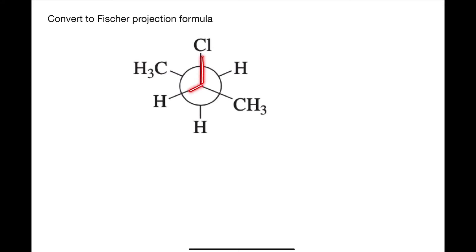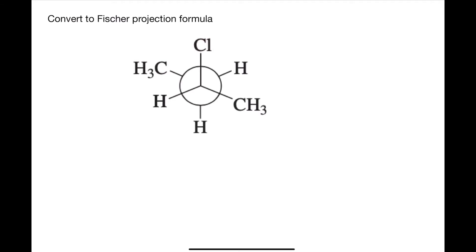Here is the staggered conformation where you can see all the bonds are separated from each other. Now we are going to rotate it so that each of these groups are eclipsing one another. If we rotate this 60 degrees, then we can tell that this chlorine will be eclipsing the CH3.